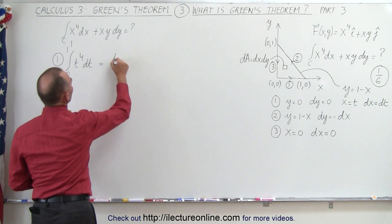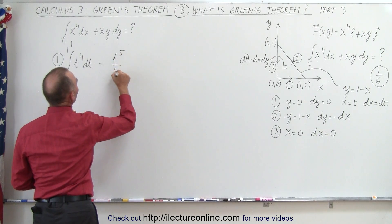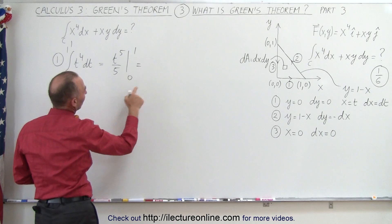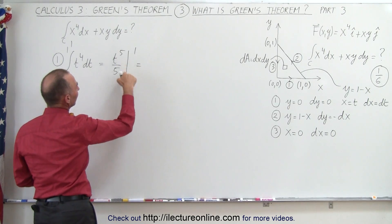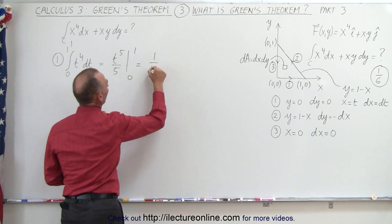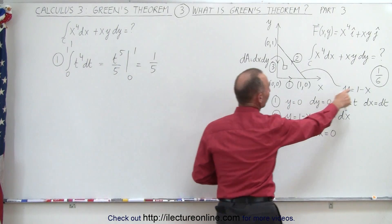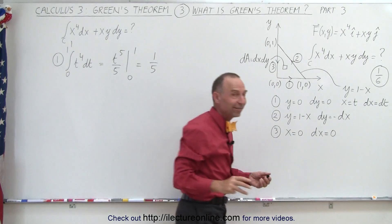So all we have to do is integrate this. So this becomes equal to t to the fifth over 5 evaluated from 0 to 1, which is equal to, well, when we plug in the lower limit, we get nothing, plug in the upper limit, we get 1 fifth. Remember, the answer we got from the previous video was 1 sixth when we used Green's theorem.